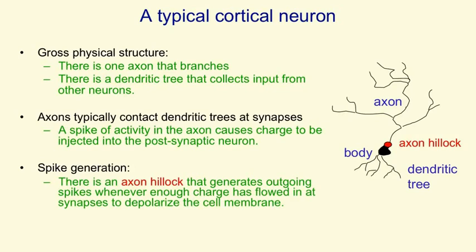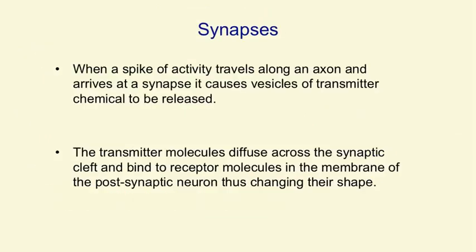A neuron generates spikes when it's received enough charge in its dendritic tree to depolarise a part of the cell body called the axon hillock. When that gets depolarised, the neuron sends a spike out along its axon — the spike is just a wave of depolarisation that travels along the axon. Synapses themselves have interesting structure: they contain little vesicles of transmitter chemical, and when a spike arrives, it causes these vesicles to migrate to the surface and be released into the synaptic cleft. There are several different kinds of transmitter chemical — ones that implement positive weights and ones that implement negative weights.